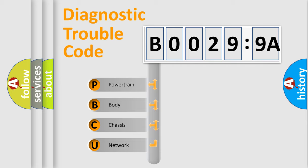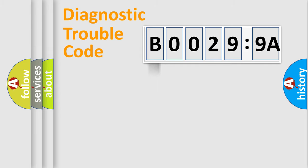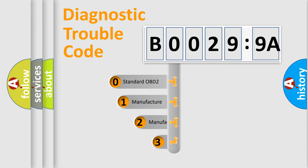We divide the electric system of automobile into four basic units: Powertrain, Body, Chassis, and Network. This distribution is defined in the first character code.